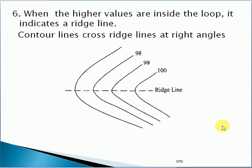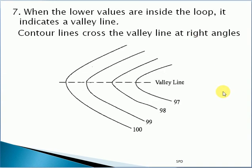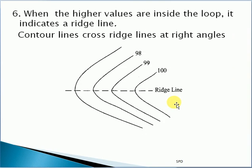When the higher values are inside the loop, it indicates a ridge line. When the lower values are inside the loop, it indicates a valley line.